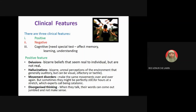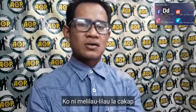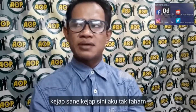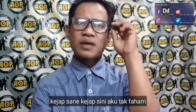Being perfectly still for hours is called being catatonic. Disorganized thinking means that when they talk, their words can be jumbled and not make sense. For example, in Malay: 'Oh tak baik untuk kesihatan, kau ni melilau-lilau lah cakap, kejap sana kejap sini, aku tak faham' — meaning the speech is incoherent and hard to follow.